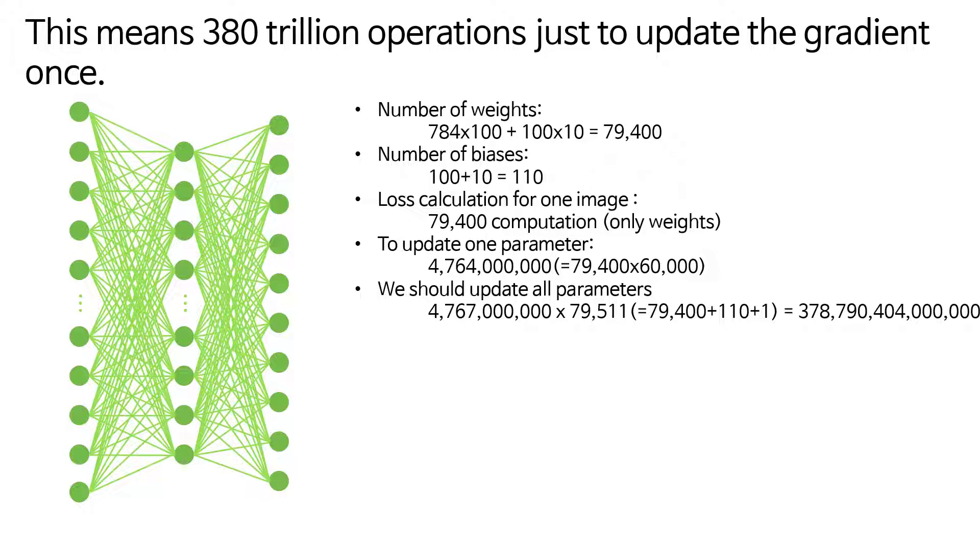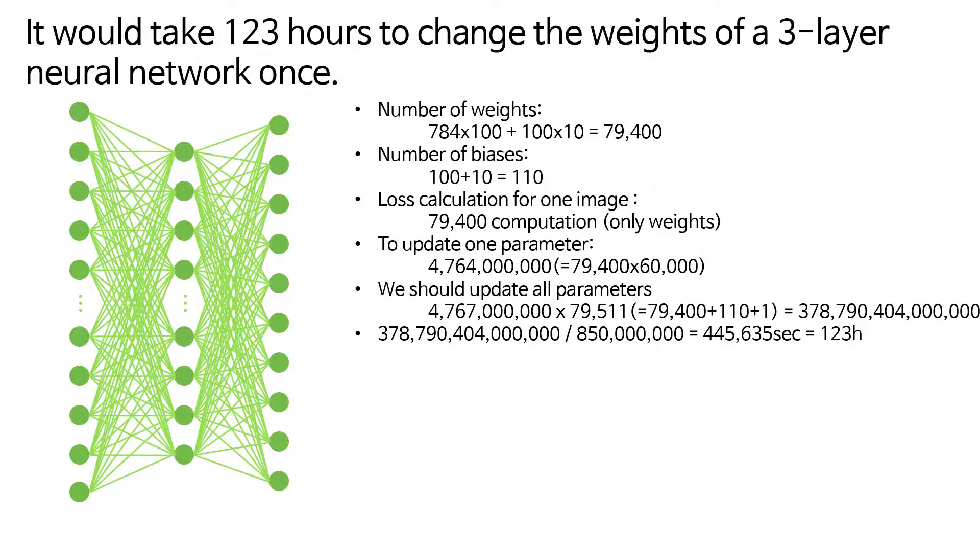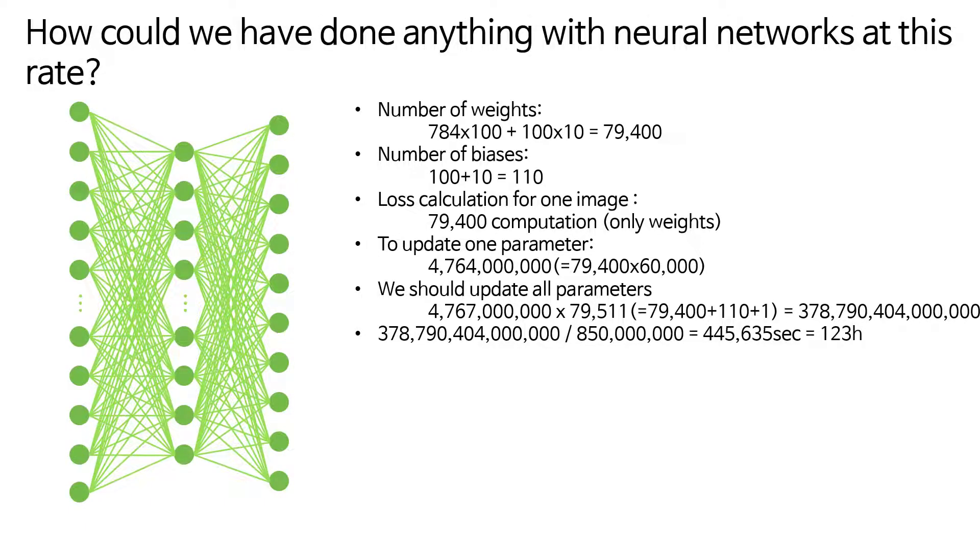With a CPU processing speed of 850 million operations per second, based on i7-8750H, it would take 123 hours to change the weights of a three-layer neural network once. Finding the best weights requires hundreds to thousands of iterations. How could we have done anything with neural networks at this rate?